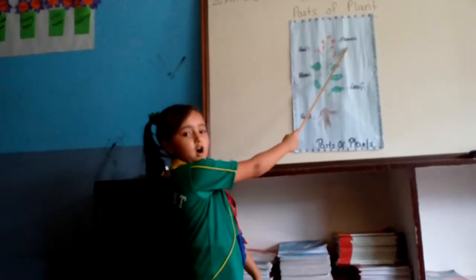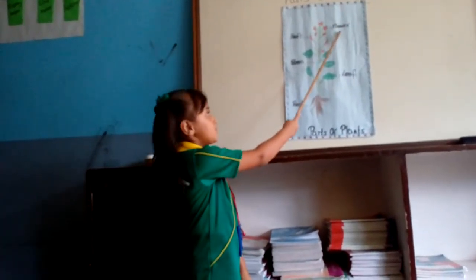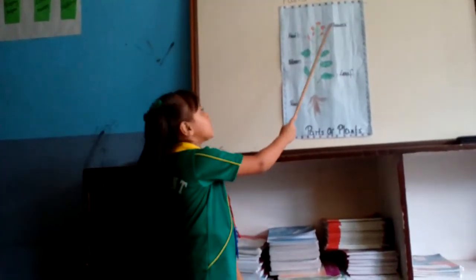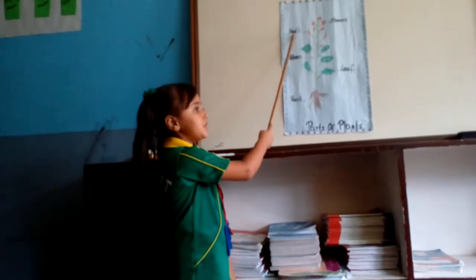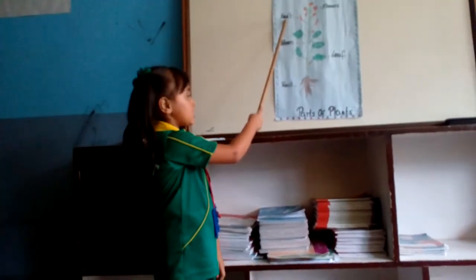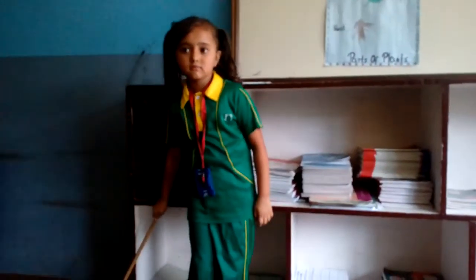This is the flower; it has fruit. This is the fruit — it has hidden seeds. Very good.